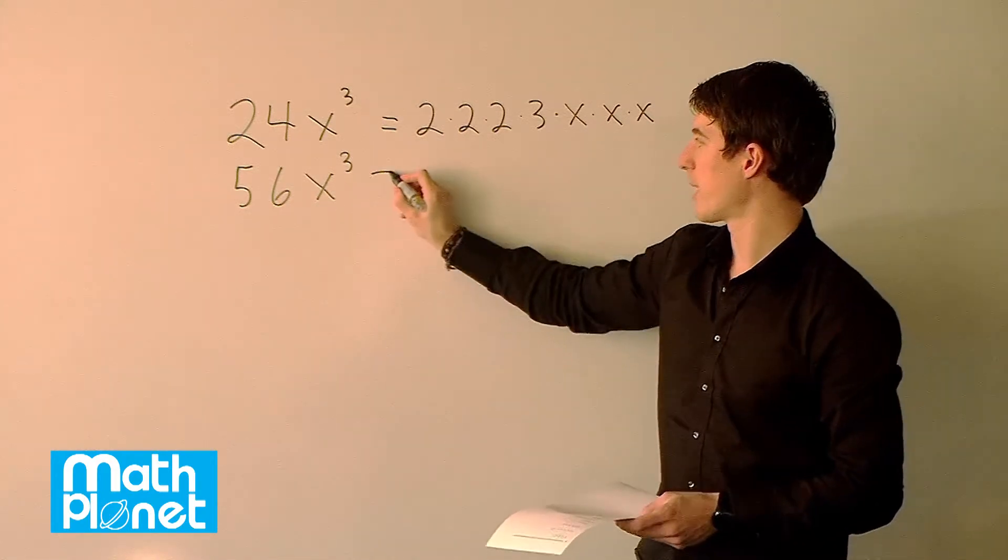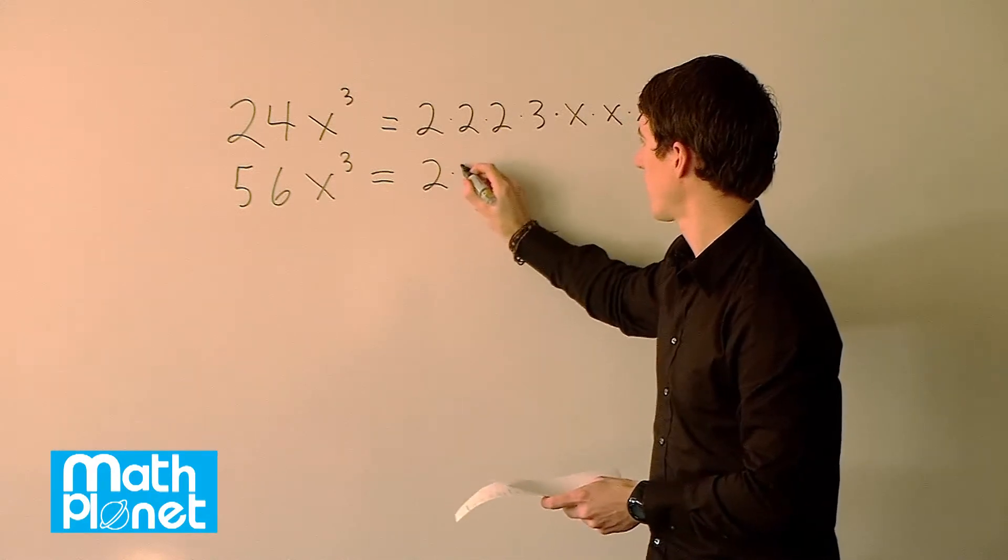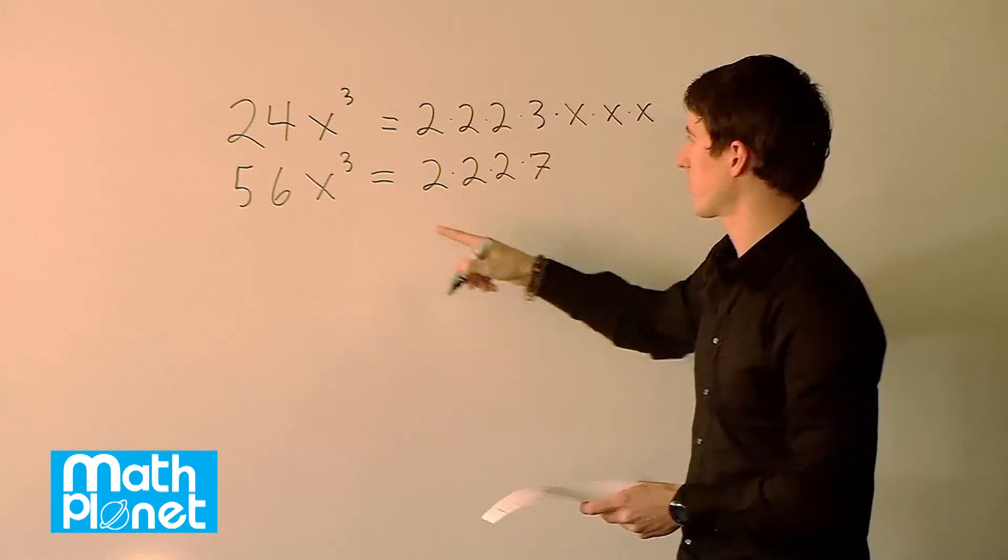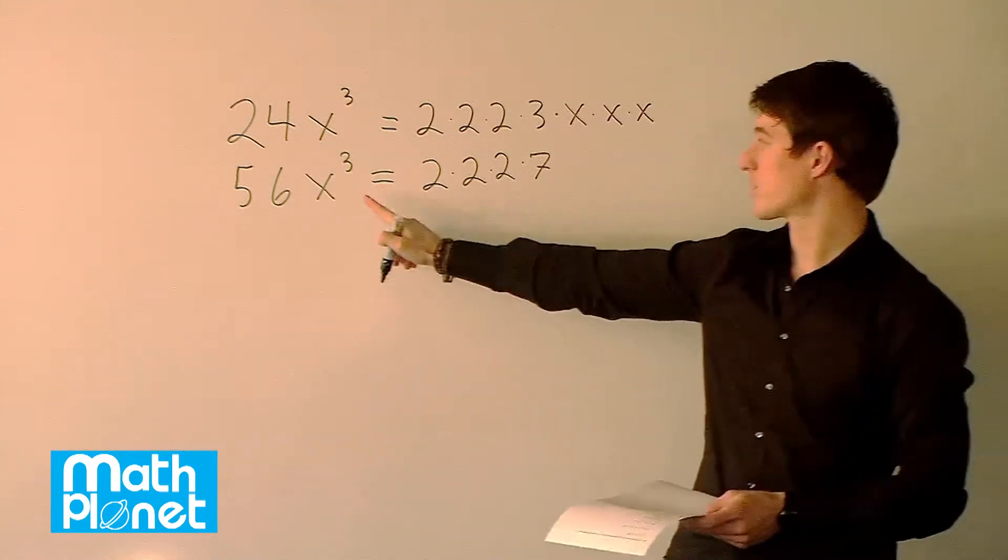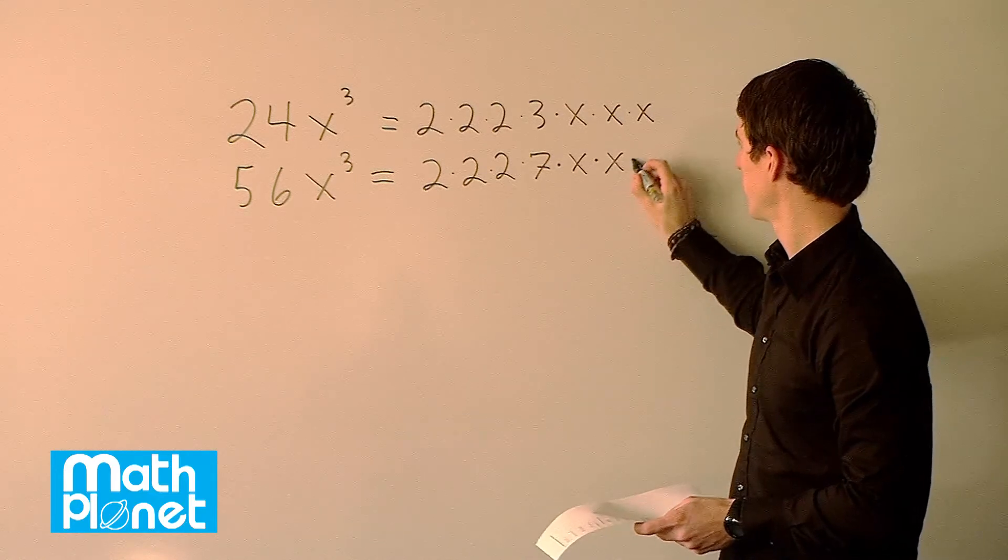So let's do the same thing here and then we'll compare. So the 56 we can rewrite as 2 times 2 times 2 times 7, gives us 56, and then again we just have three x's: times x times x times x.